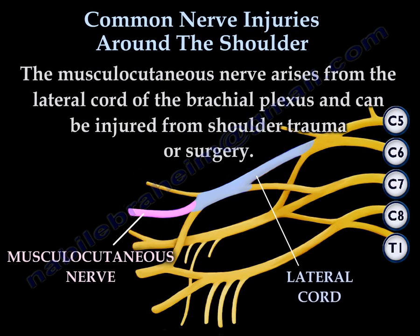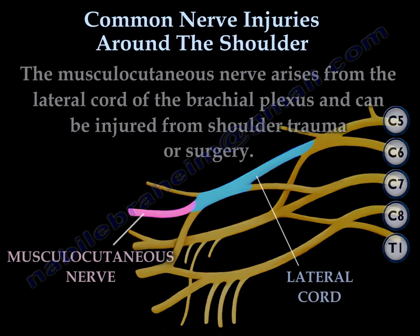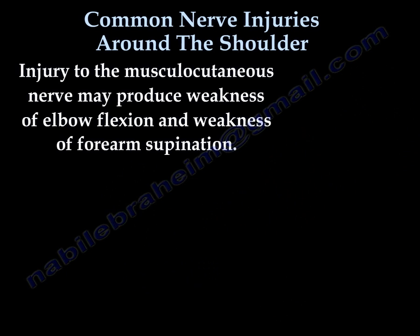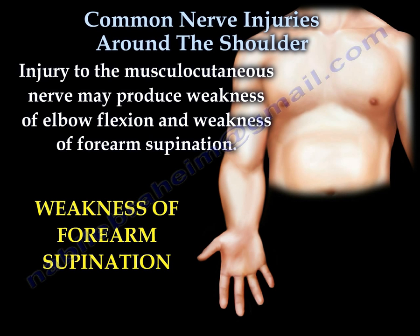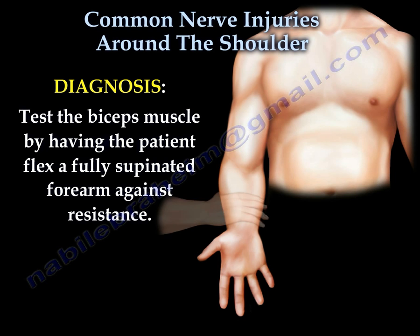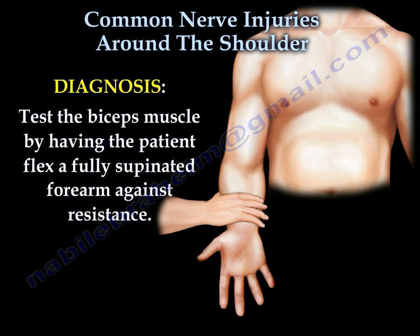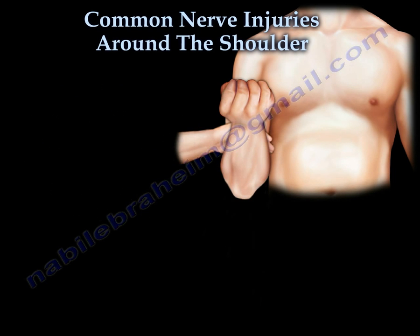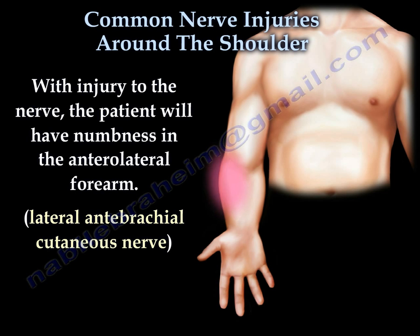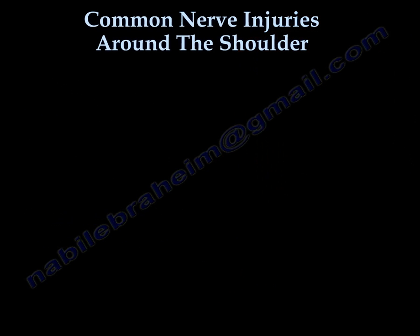The nerve arises from the lateral cord of the brachial plexus and can be injured from shoulder trauma or surgery. When the nerve is injured, there will be weakness of elbow flexion and forearm supination. Test the biceps muscle by having the patient flex a fully supinated forearm against resistance. With injury to the nerve, the patient will have numbness in the anterolateral forearm, due to involvement of the lateral antebrachial cutaneous nerve.